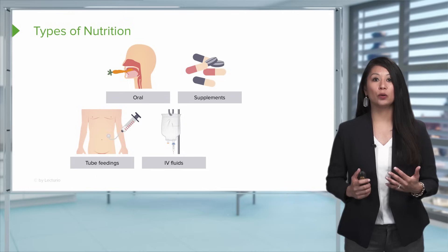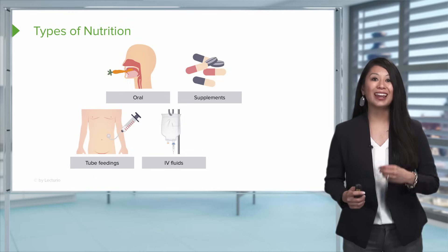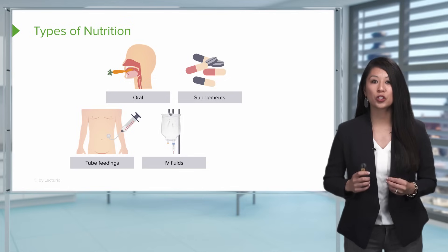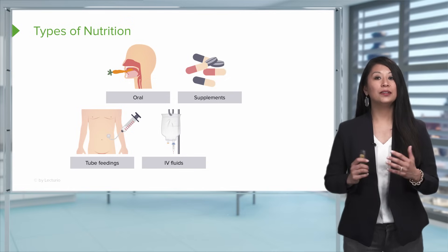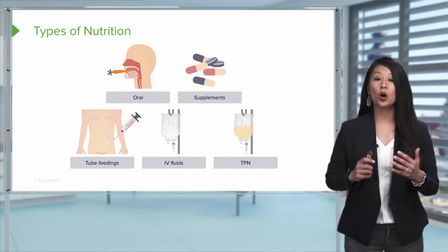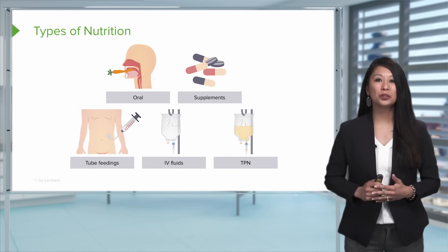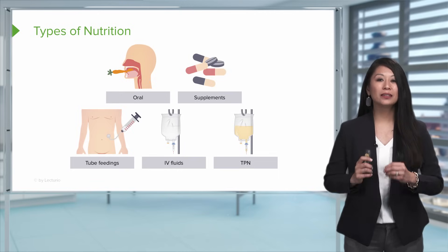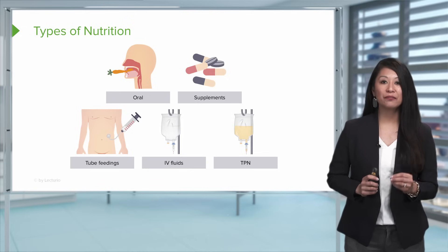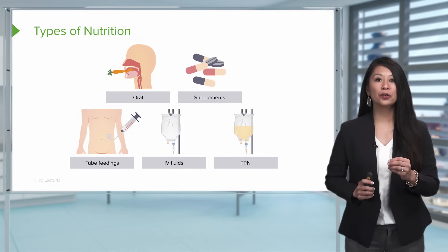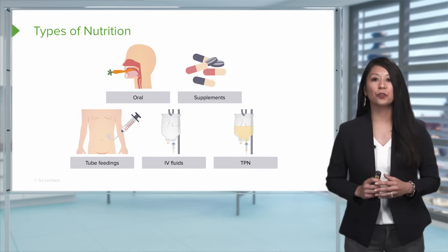We can also use IV fluids to help support hydration and electrolytes, but this is more of a short-term therapy. We also have something called TPN, otherwise known as total parenteral nutrition. This is a little bit longer term than IV fluids. It's nutritional therapy that has lipids for energy and different hydration electrolytes.